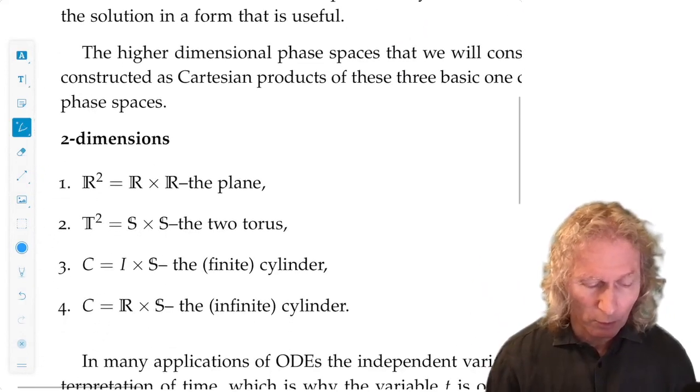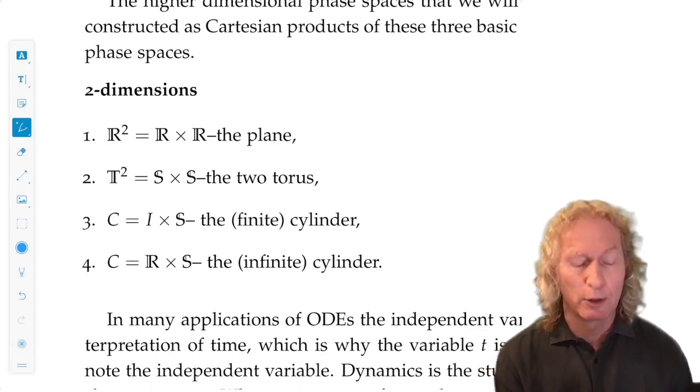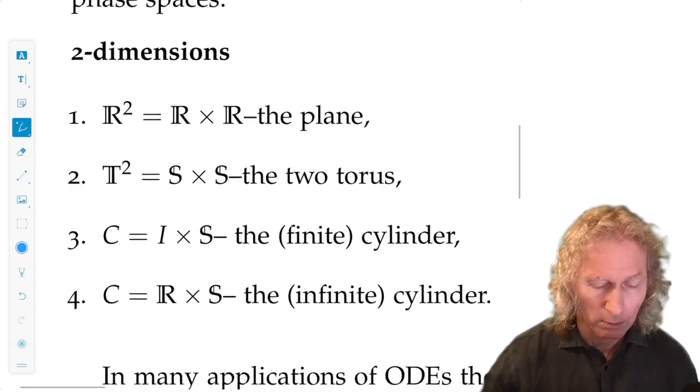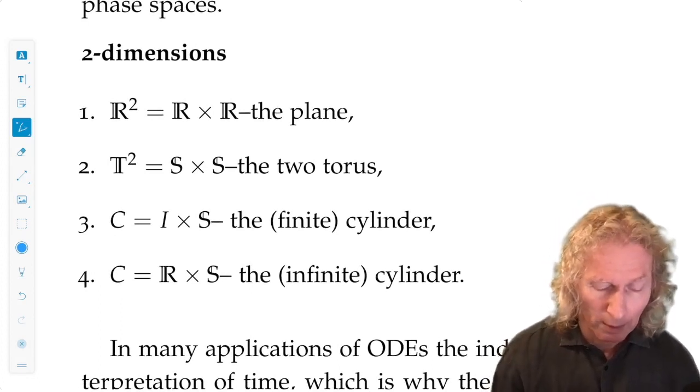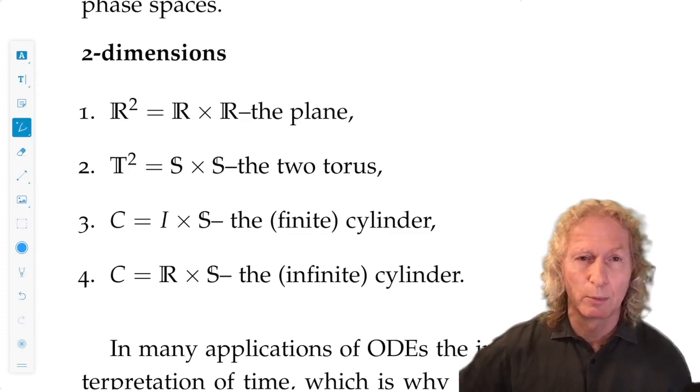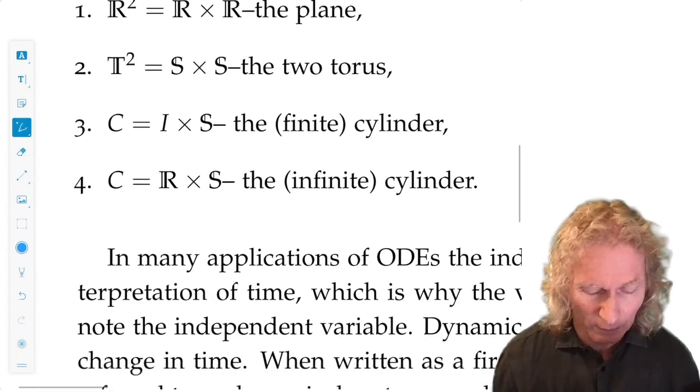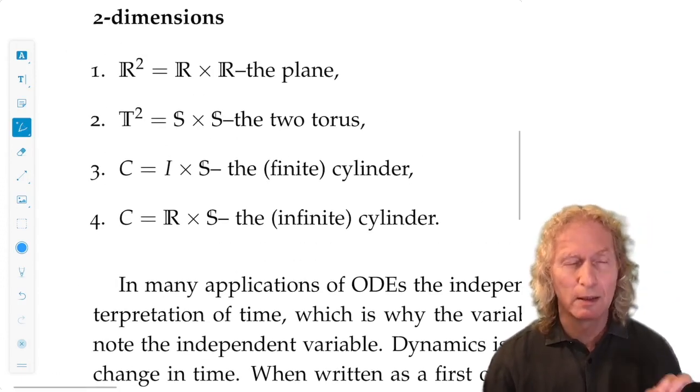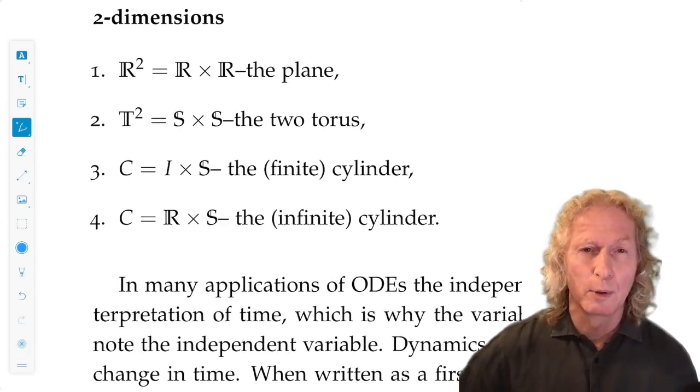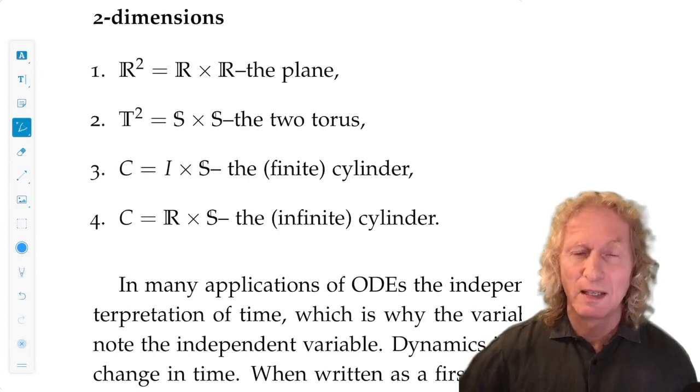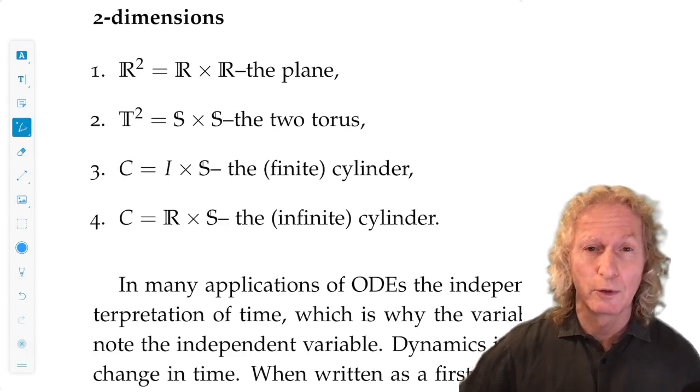What about two dimensions? There are different possibilities for phase space. We could have the plane R^2, the Cartesian product of two real lines. The two torus T^2, the Cartesian product of two circles. The finite cylinder, the Cartesian product of a finite interval and a circle, and the infinite cylinder. We'll see many examples where these different structures of the phase space are present in our specific ODEs.